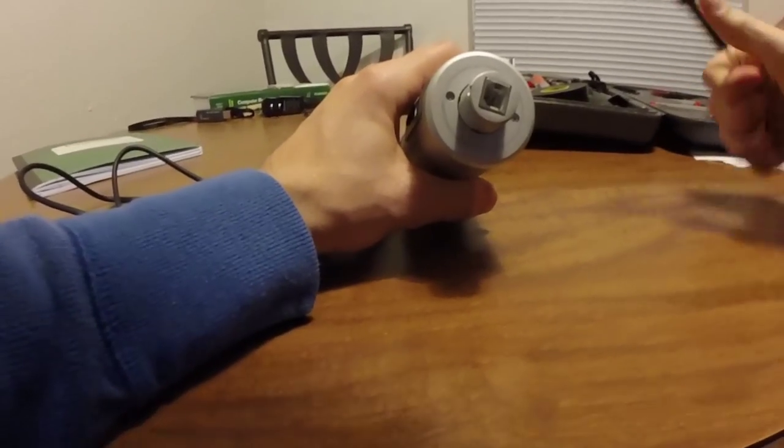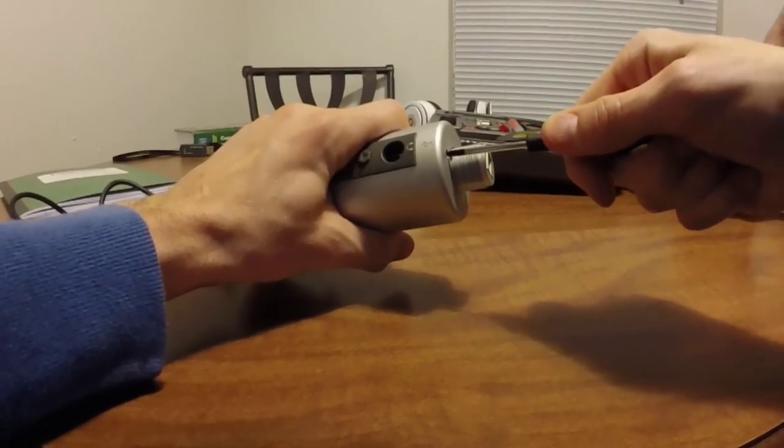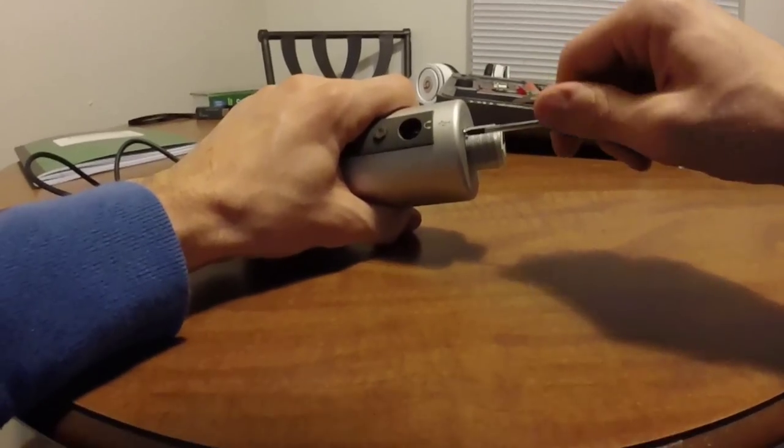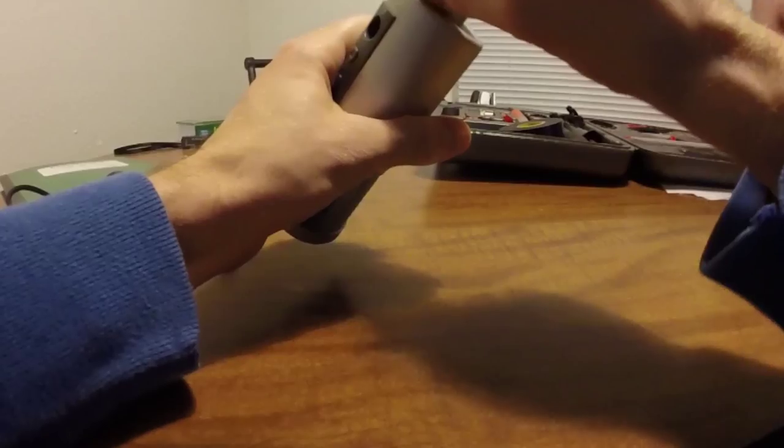Alright, so we have here an Audio-Technica ATR2500 USB microphone and to disassemble it, it's very easy. We're first going to start off by removing the two screws in the bottom of the microphone.